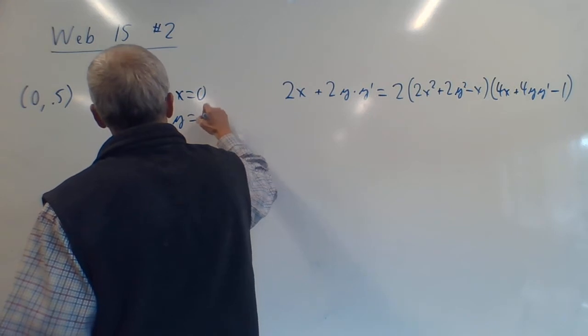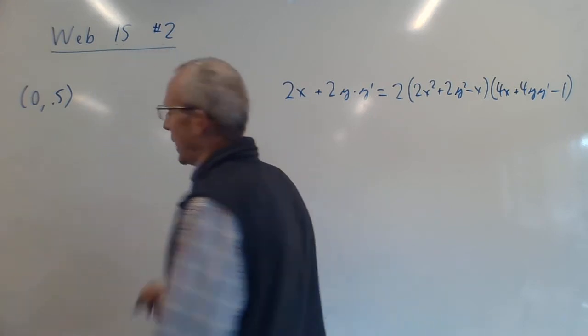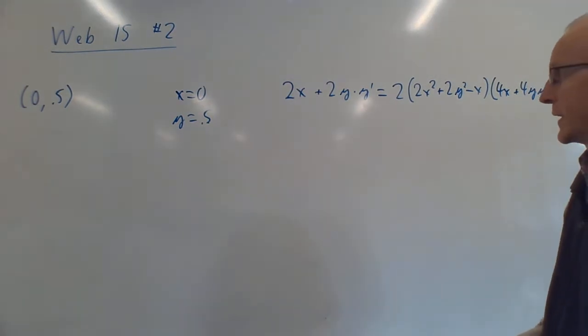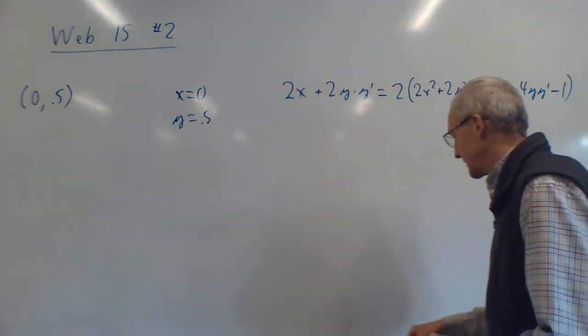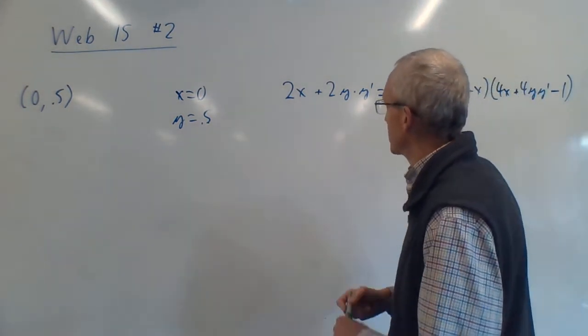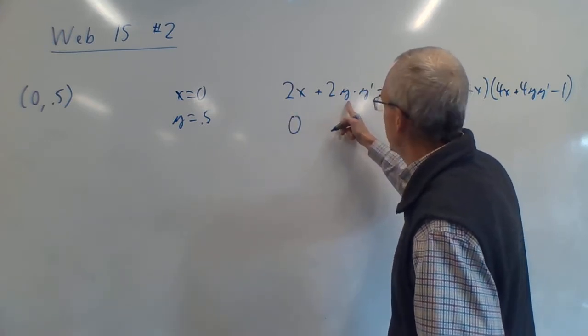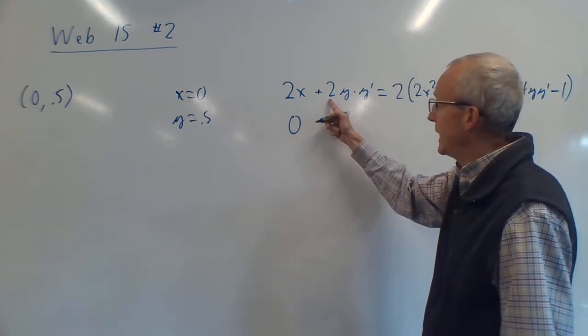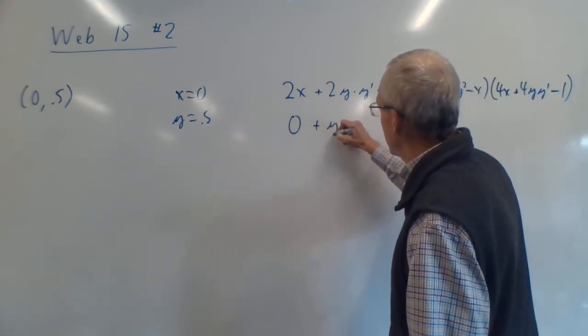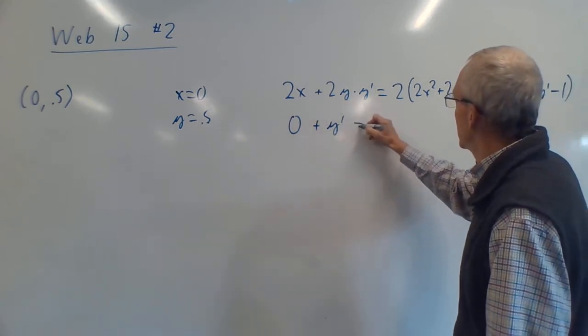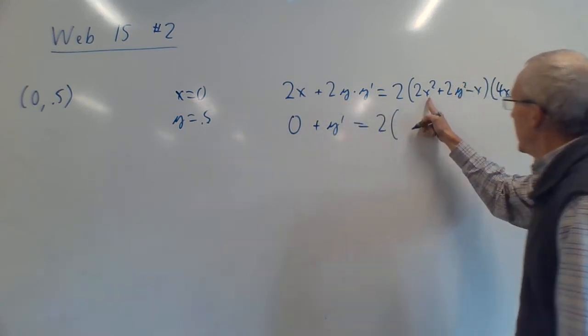You know it'd be nice if it was 1, maybe you guys have a 1, that'd be even easier. But 0.5 is not bad. It makes the math way easier. Okay, let's plug in x = 0. Well, that term goes away, so that's 0 because x is 0. This one, y is 0.5. 0.5 times 2 is 1, so that's just plus y'.